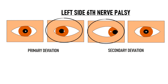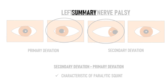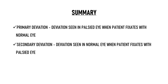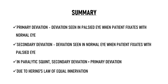We can clearly see that the secondary deviation is more than the primary deviation, and this is a characteristic feature of paralytic squint. To repeat: primary deviation is the deviation seen in the palsied eye when the patient is fixating with his normal eye, and secondary deviation is the deviation seen in the normal eye when the patient fixates with his palsied eye. In a paralytic squint, secondary deviation will be more than primary deviation, and this is due to Herring's Law of Equal Innervation.